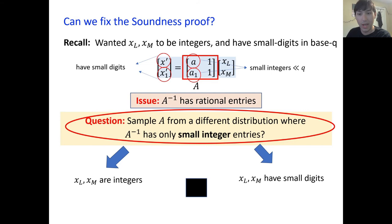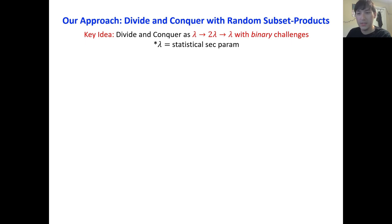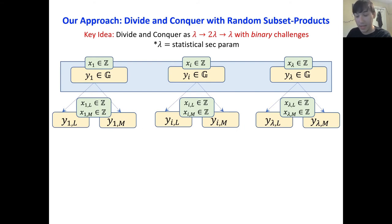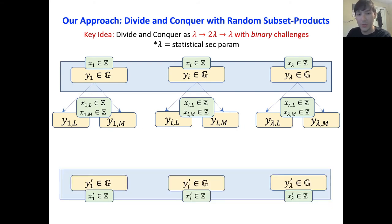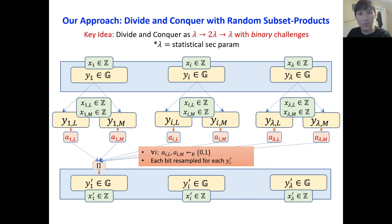Our approach is a divide-and-conquer approach with random subset products. The key idea is to fix a statistical security parameter lambda, so our protocol will be a statistically secure protocol. We divide and conquer lambda different statements into two lambda different statements, and then recombine into lambda different statements with binary challenges. Concretely, fix lambda statements Y_1 through Y_lambda and lambda different witnesses X_1 to X_lambda. Split them exactly as before, and now for the recombination step we sample bits and perform a random subset product. These are uniformly random bits, and each bit is resampled for each Y_i prime, leading to 2 lambda squared bits of randomness.